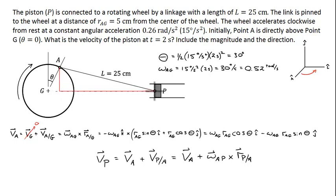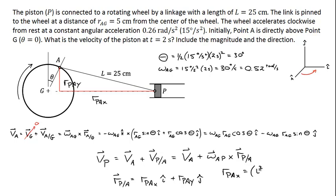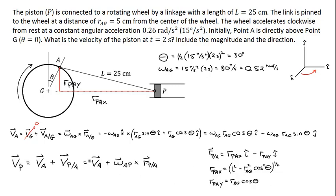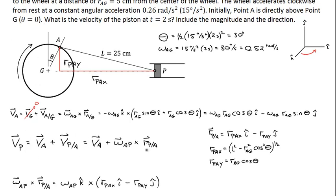For the position of P with respect to A — we have a right triangle, with components RPAx and RPAy. The position of P with respect to A equals RPAx in the i-hat direction plus RPAy in the j-hat direction. Using trigonometry and the Pythagorean theorem: RPAx equals the square root of L squared minus RAG squared cosine squared theta, and RPAy equals RAG cosine theta. Substituting into the relative velocity equation with the cross product of omega AP and the position vector, we can now evaluate.